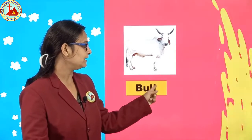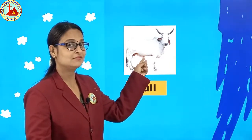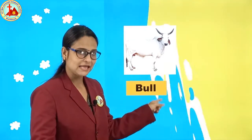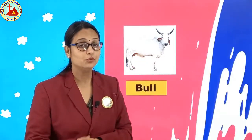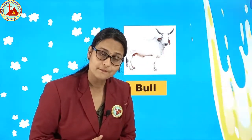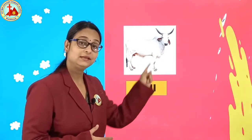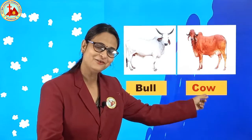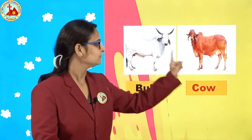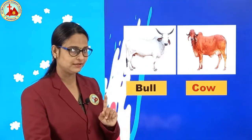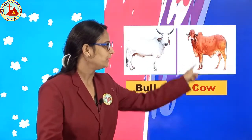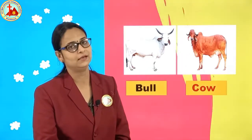One more. B-U-L-L. Which animal is this? Bull. Bull is masculine. Now what about feminine? Cow. Bull, cow. Repeat after me: bull, cow. Cow is feminine gender.